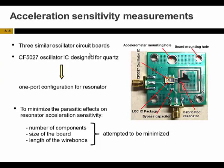The next step is to measure the acceleration sensitivity of these resonators. For this purpose, we employ the resonator in an oscillator loop. You can see the PCB of the oscillator circuit in this picture. We have three similar oscillator boards using those three resonators. For making the oscillator board we used a CF-5027 oscillator IC, which is designed for quartz commercial applications. To have the same phase shift as quartz, we use our resonators in a one-port configuration.